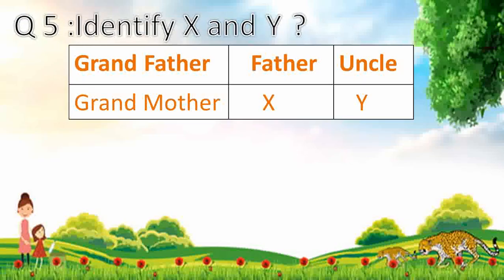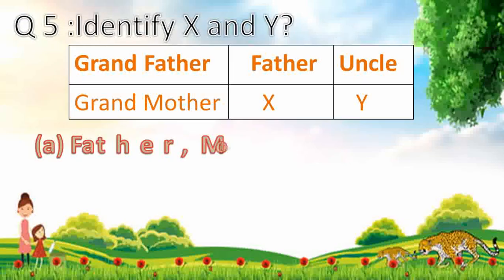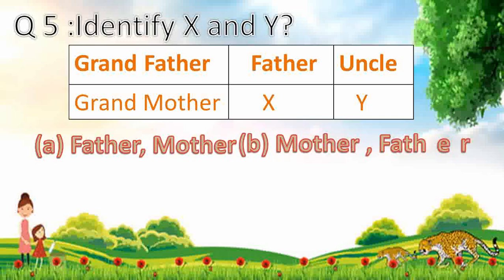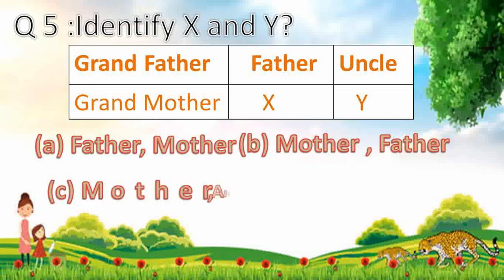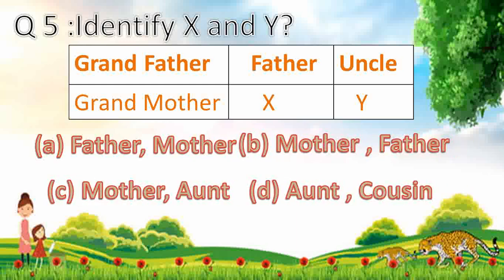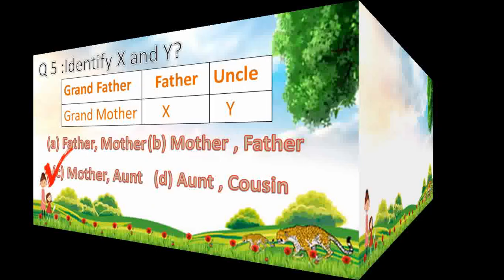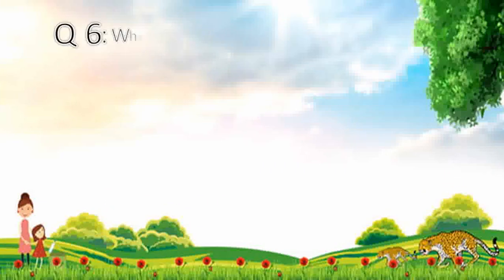Question number 5. Identify X and Y. Answer C — Mother and aunt. Very nice.